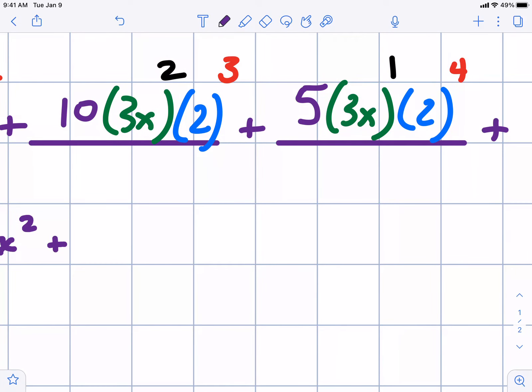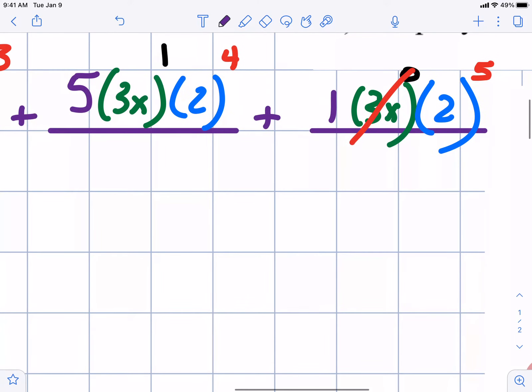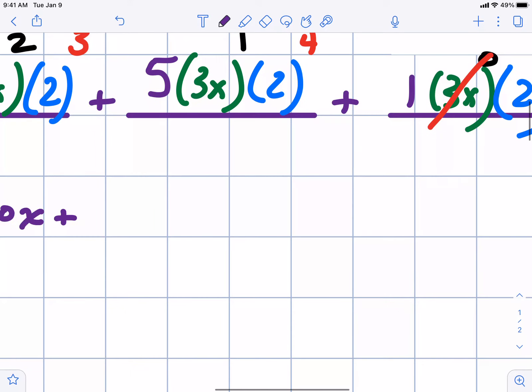We have 2 to the fourth. We have 16 there times 15. That should be 240x. And last but not least, our constant term is just going to be 2 to the fifth power, which is 32.